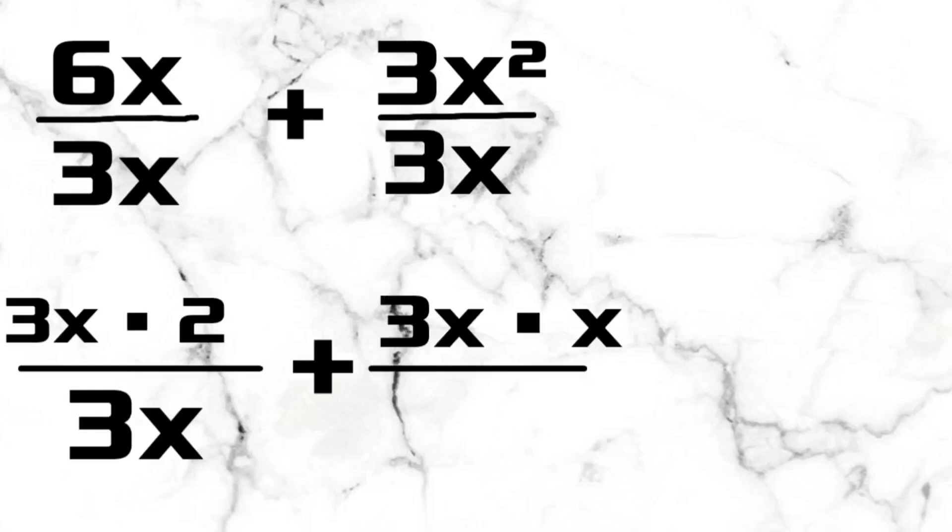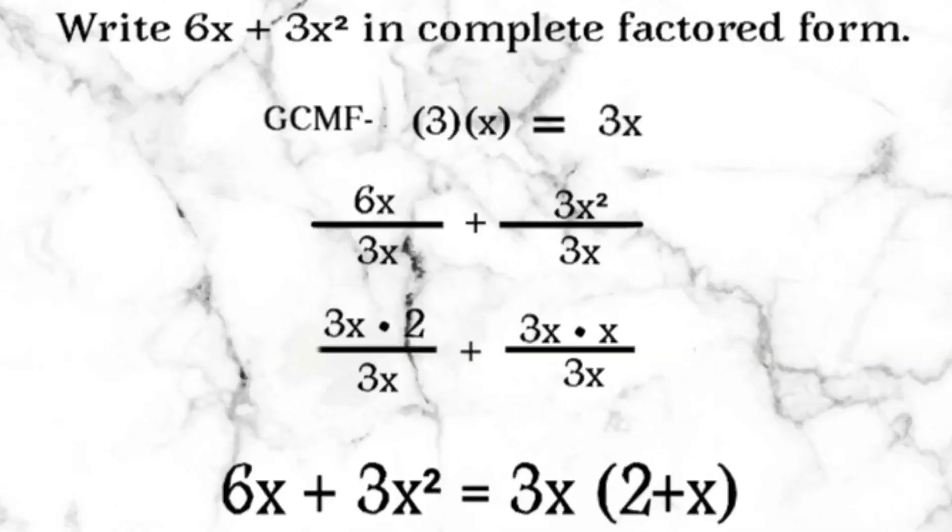Then, we need to rewrite each term as a product. The last step is to write the complete factored form. 6x plus 3x squared equals 3x times the quantity of the sum of 2 plus x.